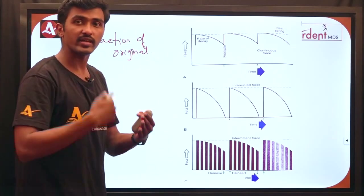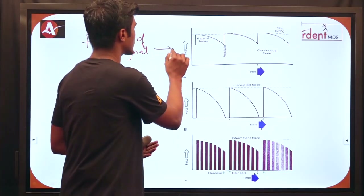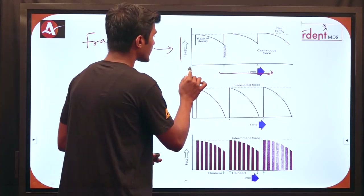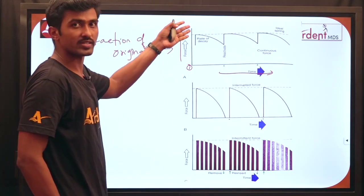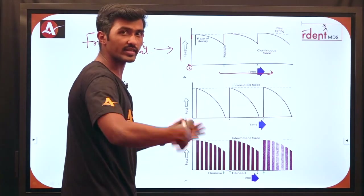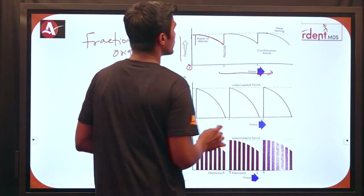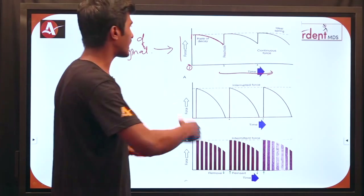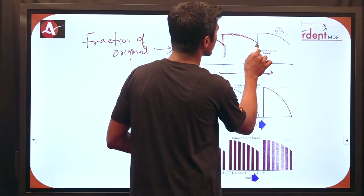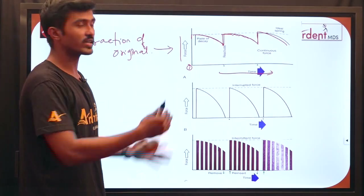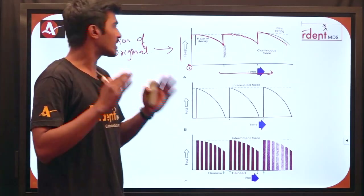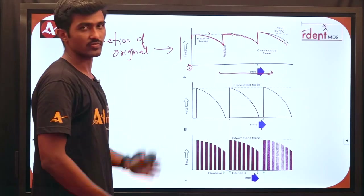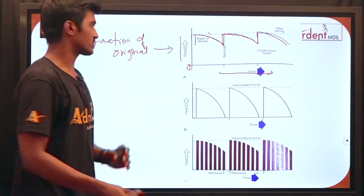If the fraction of original force remains between appointment intervals, such force is called continuous force. Looking at the diagram — on day one the orthodontist increases the appliance force; as days progress, the force level decreases but never comes to zero. Before it reaches zero, the patient revisits and the orthodontist activates the appliance again. So continuous force never drops to zero.